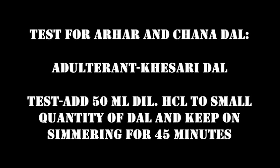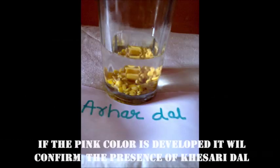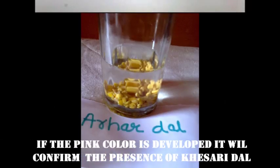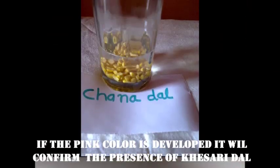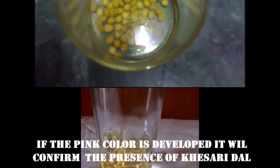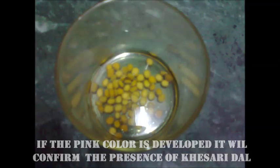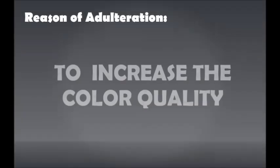Pulses and Grains — Test for Arhar and Chana Dal — adulterant: khesri dal. Add 50 ml of dilute HCl to a small quantity of dal and keep simmering for 45 minutes. If a pink colour appears, it confirms the presence of khesri dal. Reason of adulteration: to increase the quantity.